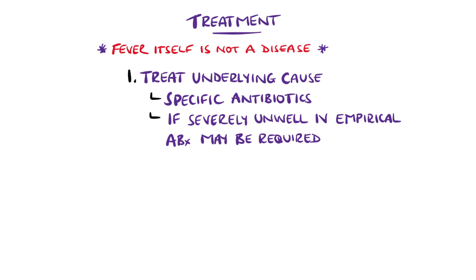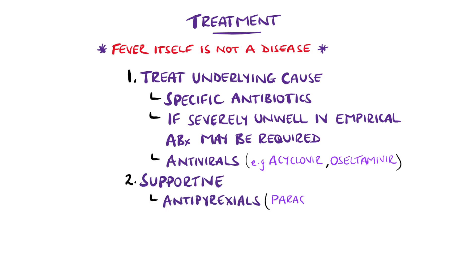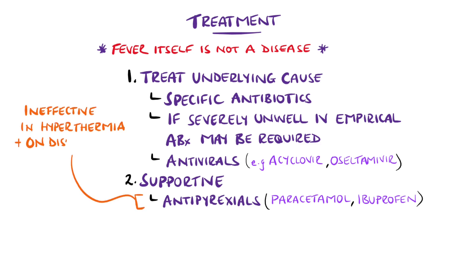Antivirals are indicated in some cases — for example in herpes simplex infections like encephalitis — but are also at times used in chickenpox and shingles. Oseltamivir is a neuraminidase inhibitor that can be used for treatment of influenza in at-risk patients. Antipyrexial agents like paracetamol or ibuprofen are mostly used to relieve the fever, although they do not aid in reducing the duration of infection and will not have an effect on hyperthermia, as seen in the pathophysiology.